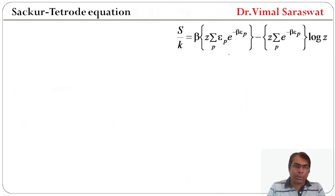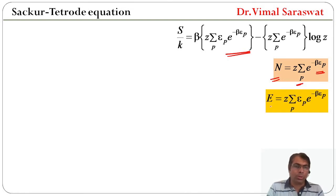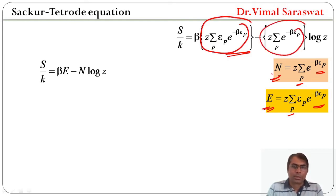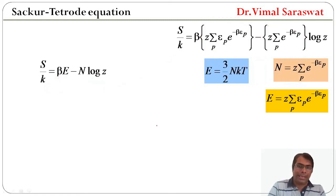Since N equals z * sigma_p e^(-beta * e_p) and E equals z * sigma_p e_p * e^(-beta * e_p), we replace the corresponding brackets to get S/k equals beta * E minus N * log z. Since E equals (3/2) * N*k*T and beta equals 1/(k*T).